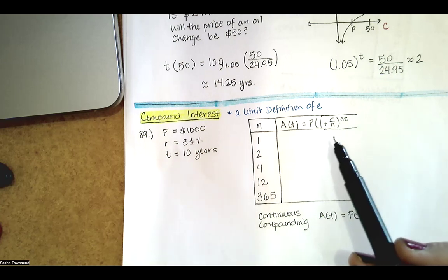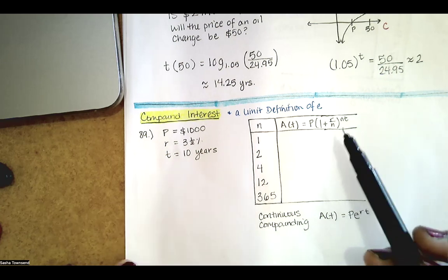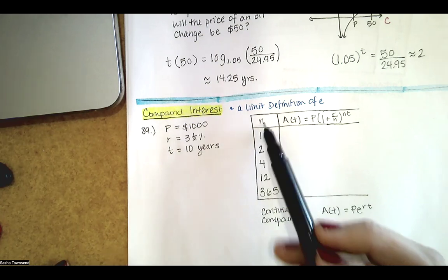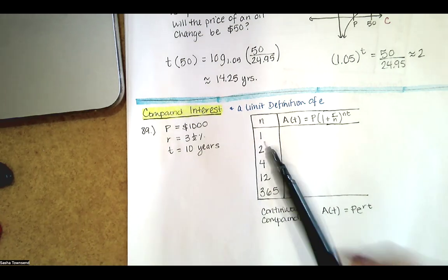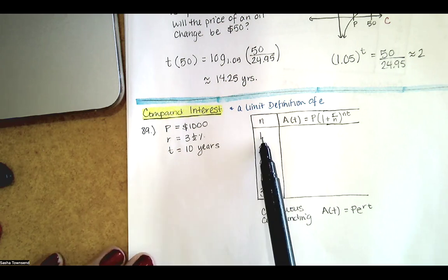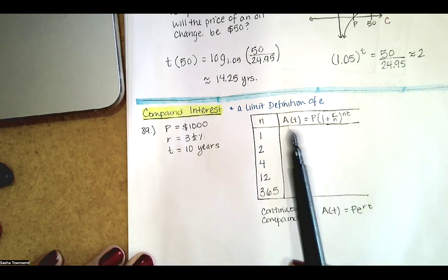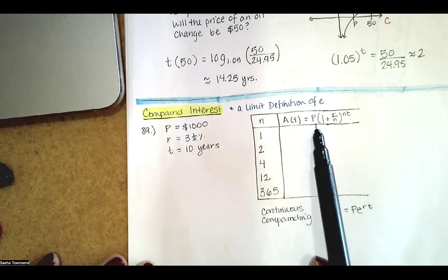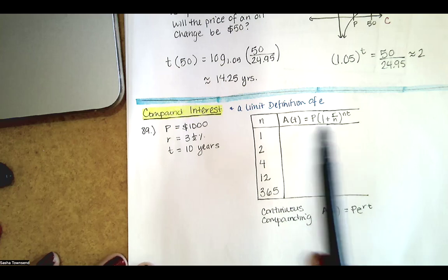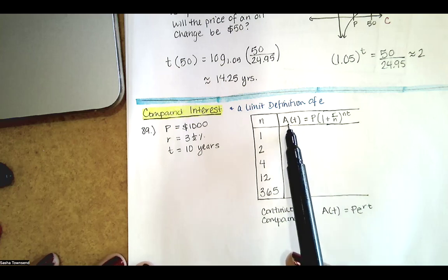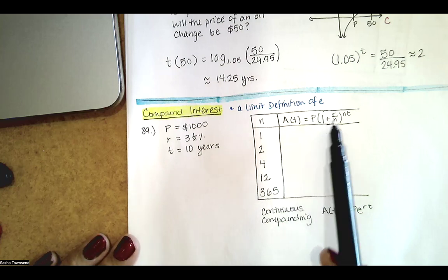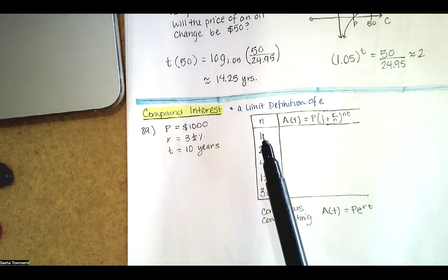In principle, this formula is relatively easy to understand. When n equals one, we're saying only one time per year we're going to add interest to the original balance — the original amount that was deposited in the account. After a year, we'll have that original amount plus the percentage associated with the interest rate.